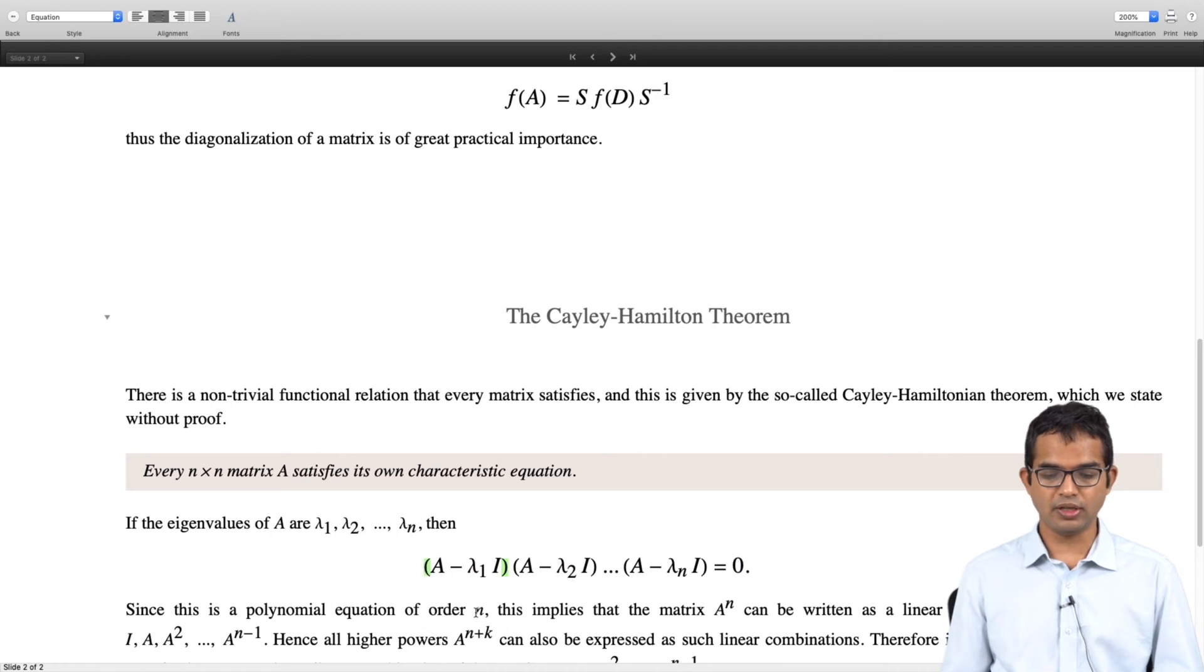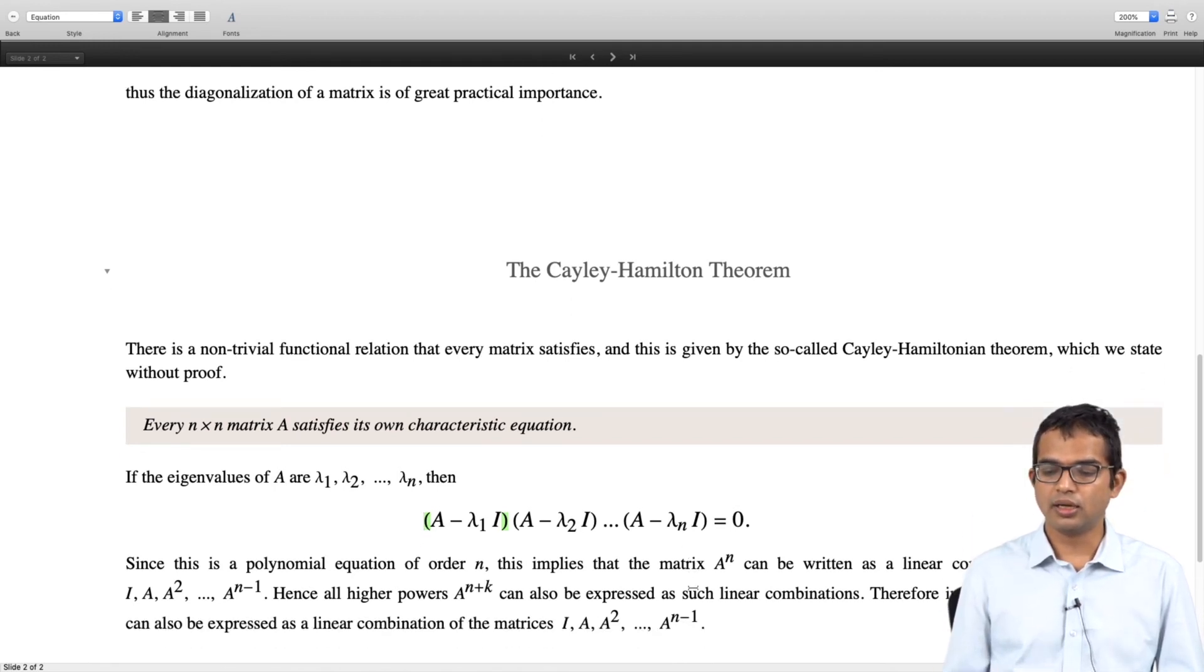Now this is a polynomial equation of order n, so this means that you can expand it out and it is like A to the n times some coefficient plus A to the n minus 1 times some coefficient, all the way down to some coefficient times I equals zero. Which means that you will be able to write A to the n as a linear combination of the matrices I, A, A squared, all the way up to A to the n minus 1. So in general any higher power A to the n plus k can also be written as linear combinations of these matrices.